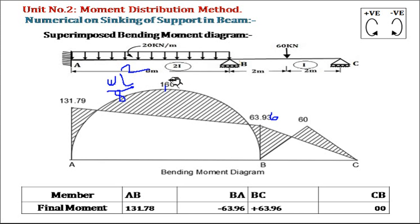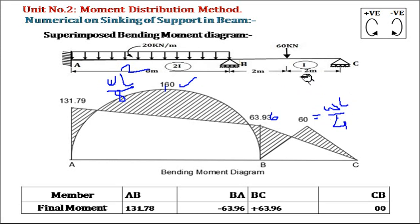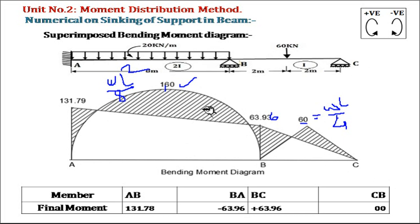For member AB: W = 20, L = 8, so WL²/8 = 20 × 64 / 8 = 160 kNm. For member BC, loaded by a point load at the center, the free BMD value is WL/4. W = 60, L = 4, so 60 × 4 / 4 = 60 kNm. For member AB with UDL, we join by a second-degree curve; for member BC with a point load, we join by a straight line. This combination of fixed and free BMD is called the superimposed bending moment diagram.